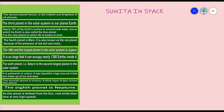The fifth and the largest planet in the solar system is Jupiter. Jupiter is the largest planet — means the biggest. It is so large that it can occupy nearly 1300 Earths inside it. So Jupiter is a very big planet.